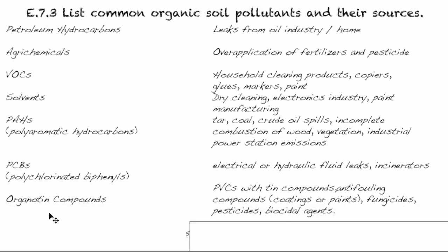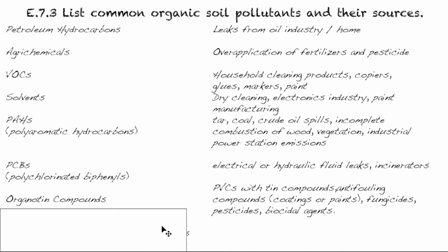Organotin compounds are PVCs with tin compounds — you must say 'with tin compounds' to get the mark. Sources include anti-fouling compounds, coatings or paints, fungicides, pesticides, and biocidal agents — anything used for killing pests or fungus. Note that you don't need to memorize all examples; just choose one favorite for each pollutant, as they rarely ask for more than one.